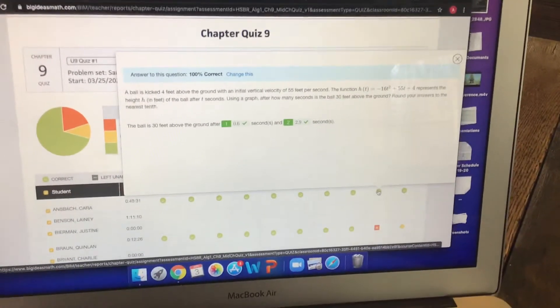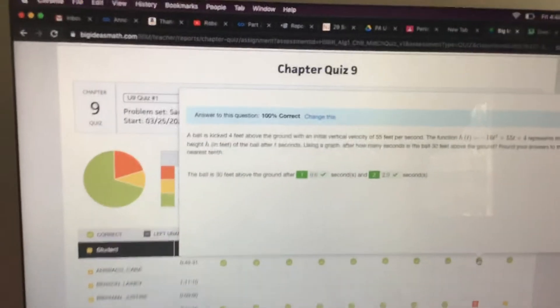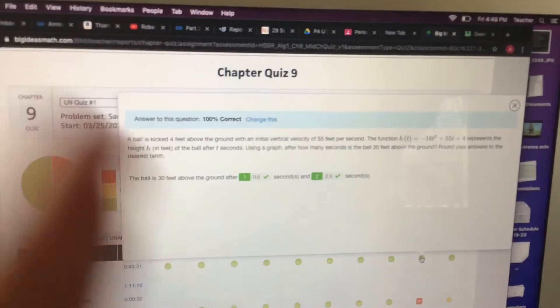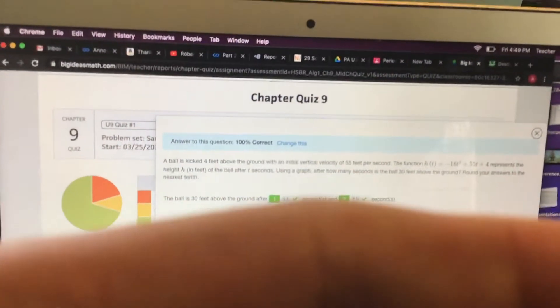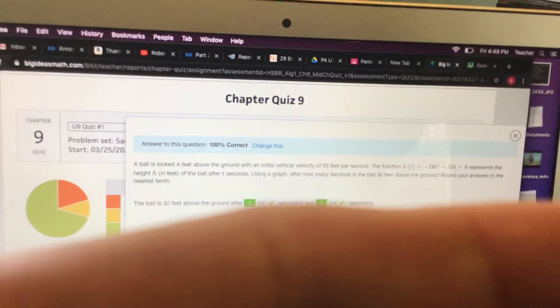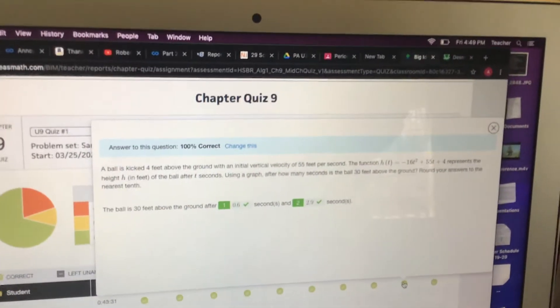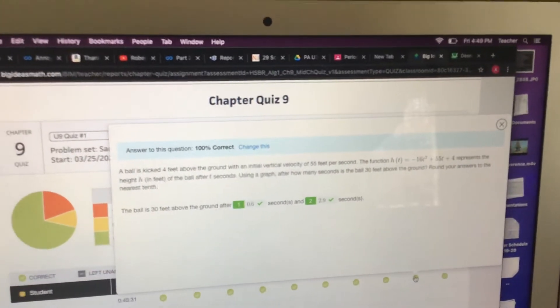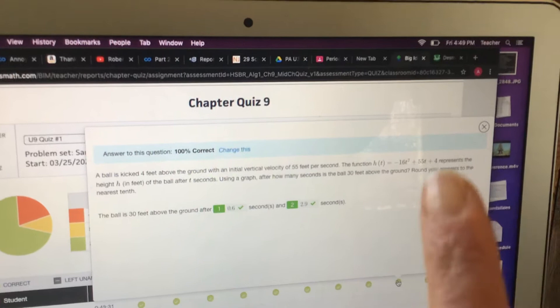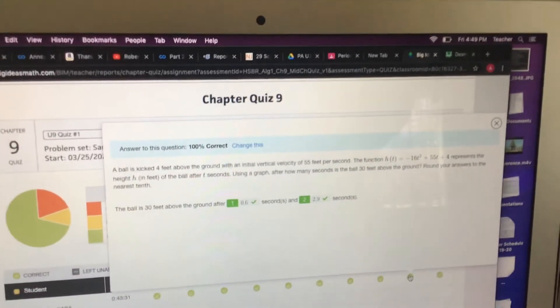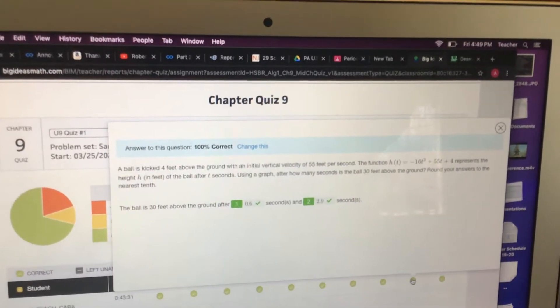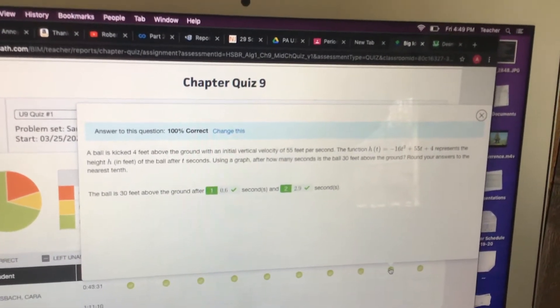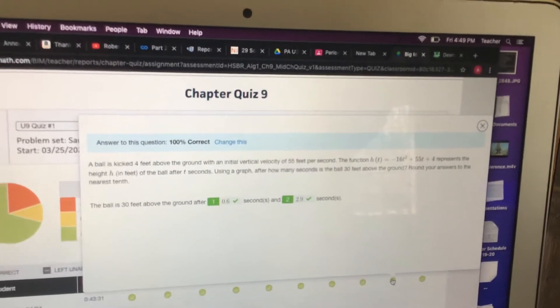Very impressive, but I do want to help you. So this one, a ball is kicked at four feet above the ground. I see you see the answers there, so just hold on a second, because I want you to know how to do this. It's kicked four feet above the ground with an initial vertical velocity of 55 feet per second. The function is right here, and this represents height h in feet after t seconds using the graph. How many seconds is the ball 30 feet above the ground? Round your answer to the nearest tenth.